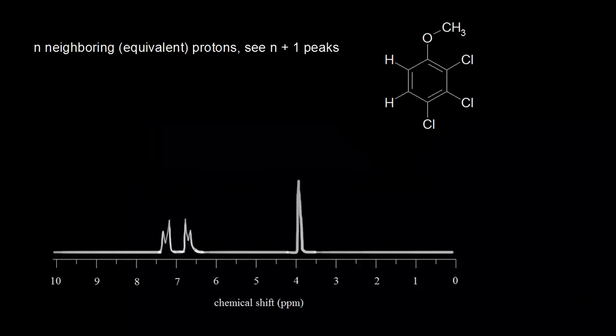The n plus one rule allows us to predict how many peaks we would expect to see for a signal in an NMR spectrum. So if we think about the signal for one proton, if that proton has n neighboring protons, we would expect to see n plus one peaks on the NMR spectrum. The n plus one rule only applies when the neighboring protons are chemically equivalent to each other.